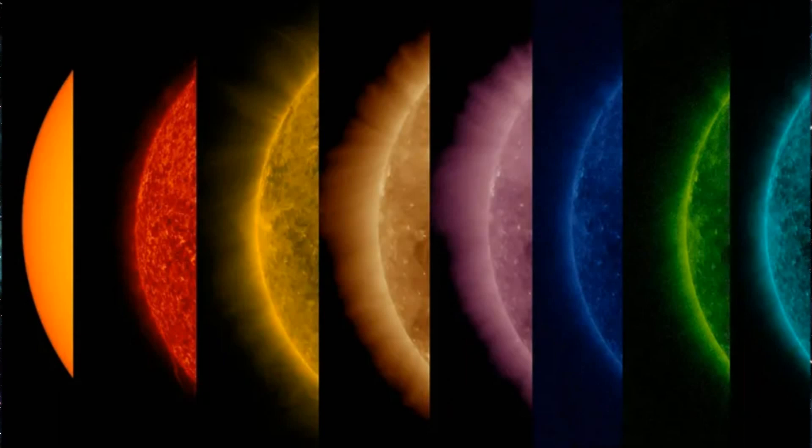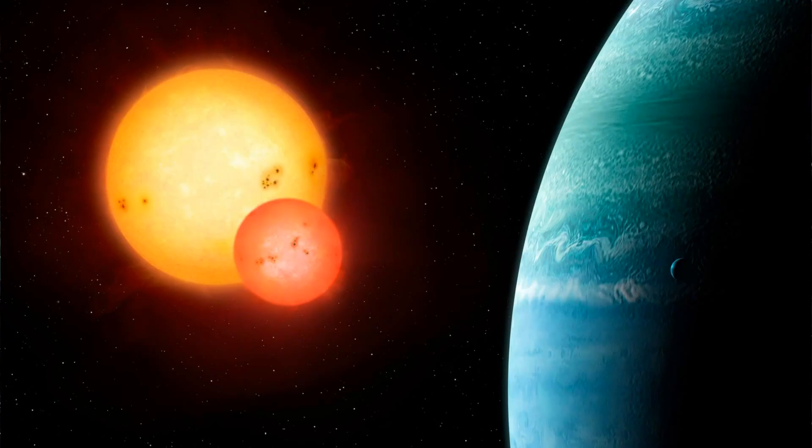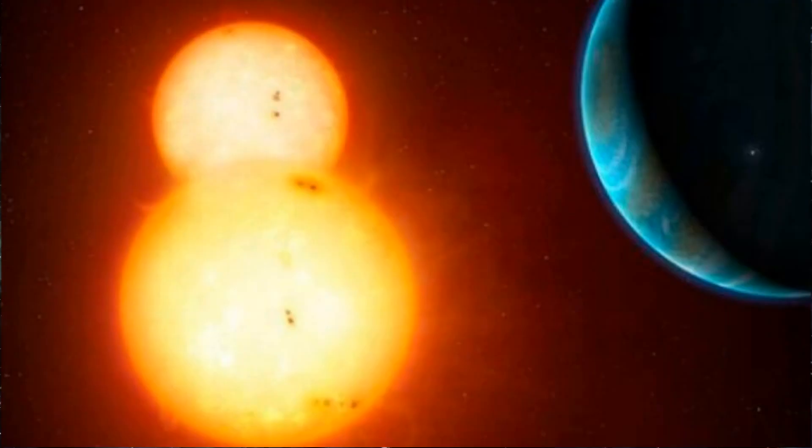While it might be surprising, the sun being green highlights the fascinating interplay between light, our atmosphere, and human perception. There are planets that orbit two stars. Did you know that these planets are called circumbinary planets and they defy the traditional view of planets orbiting a single star?